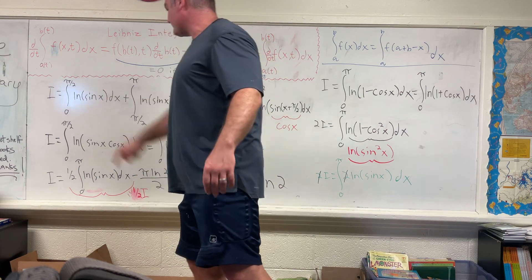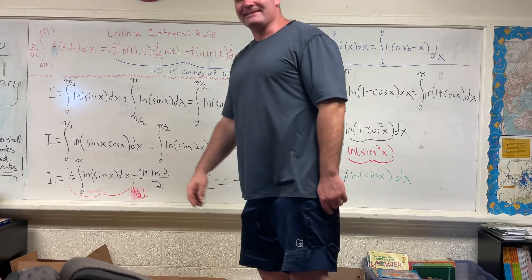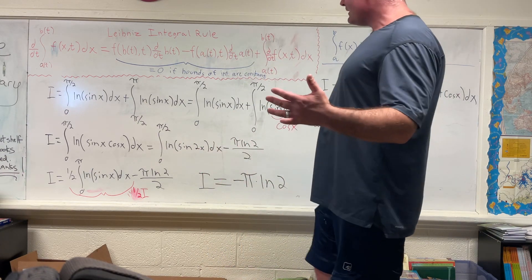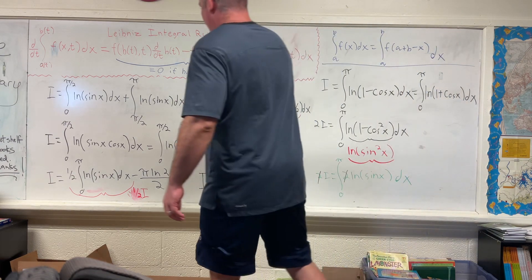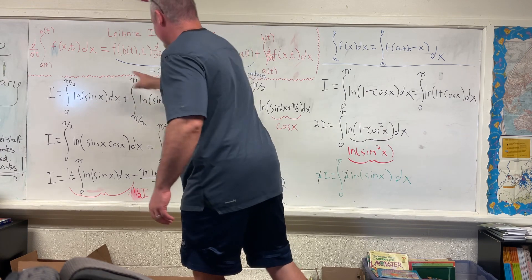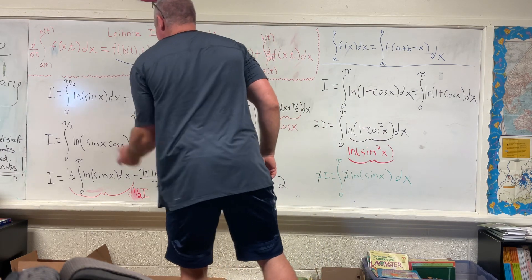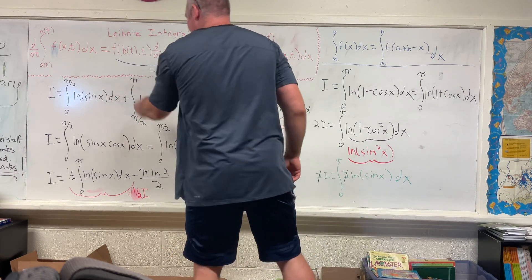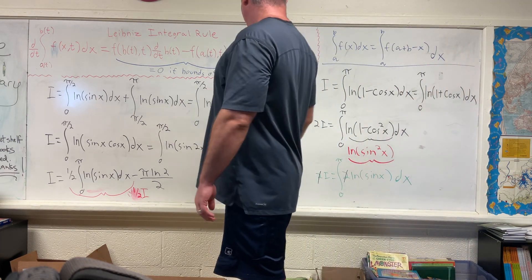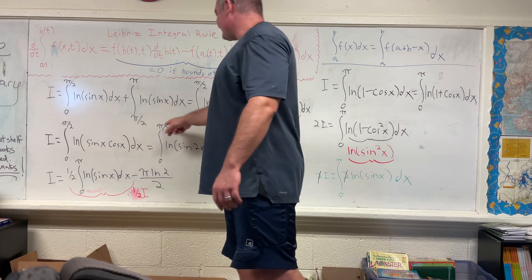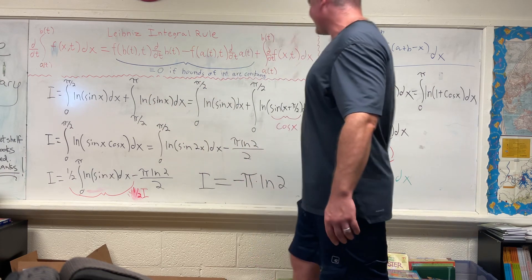For the next step, we split this integral into two parts: the first from zero to pi/2, and the second from pi/2 to pi. We know that the integral from a to b plus the integral from b to c equals the integral from a to c, so this is justified since zero to pi/2 plus pi/2 to pi is simply zero to pi.